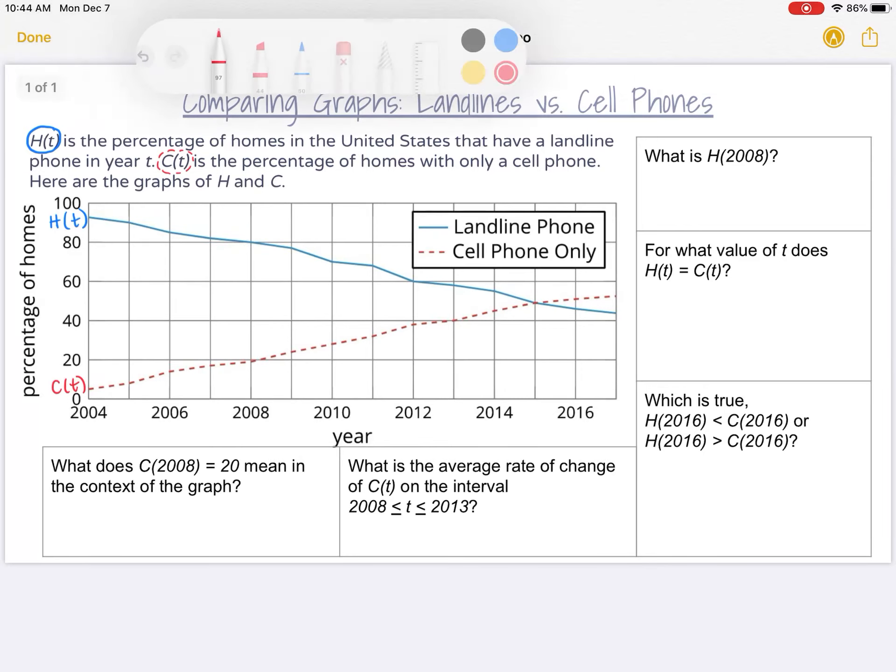So I'm going to start with my first question on the top right, which says, what is H(2008)? Well, I'm starting by noticing that I'm looking at the H graph, which is the blue solid line. It's giving me an input of 2008. So that is a time or a year. I'm going to go down to the x-axis where it says year, and I need to find 2008.